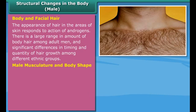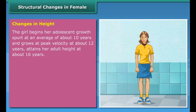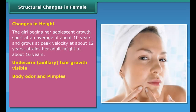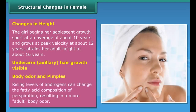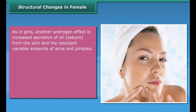Body and facial hair: The appearance of hair in areas of skin responds to the action of androgens. There is a large range in the amount of body hair among adult men, with significant differences in timing and quantity of hair growth among different ethnic groups. By the end of puberty, adult men have heavier bones and nearly twice as much skeletal muscle.